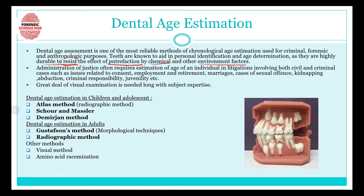Administration of justice often requires estimation of the age of an individual in litigations involving both civil and criminal cases — such as issues related to consent, employment, retirement, marriage, cases of sexual offense, kidnapping, abduction, criminal responsibility, and juvenility. Teeth have been useful in estimating the age of a person in a number of cases like these, and it is a very reliable method to determine the chronological age of a person.